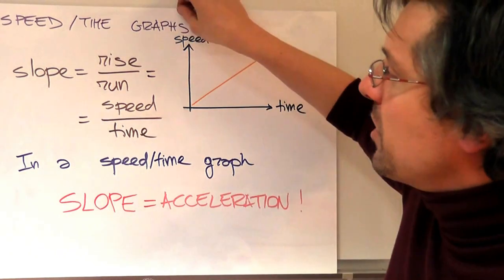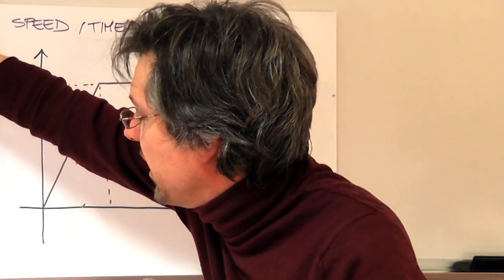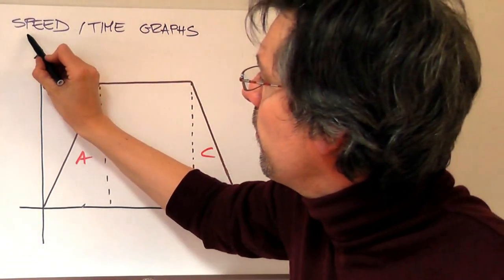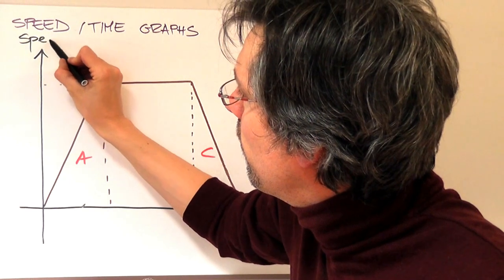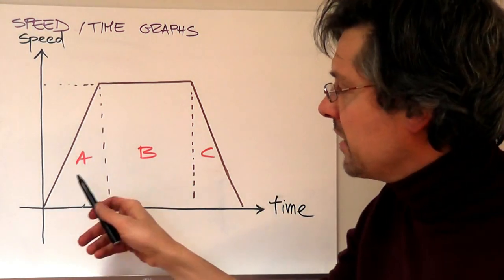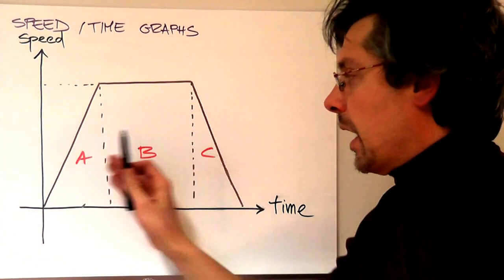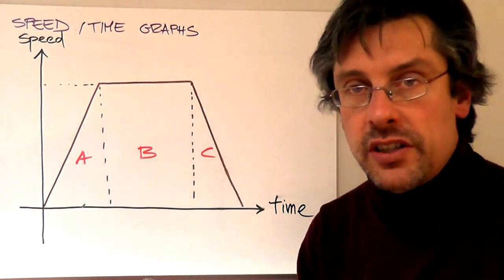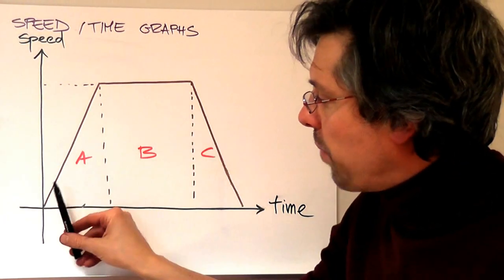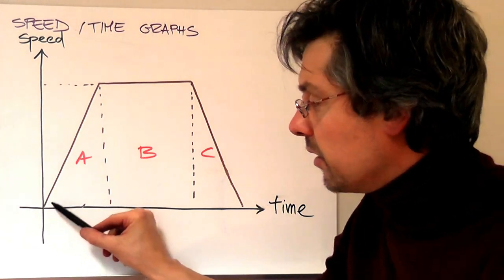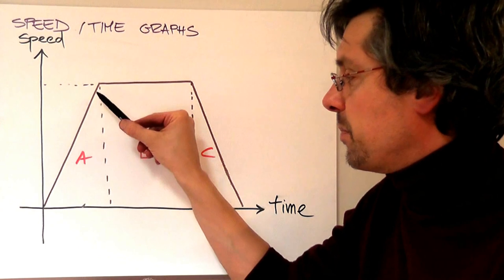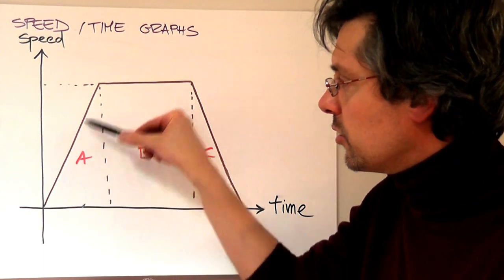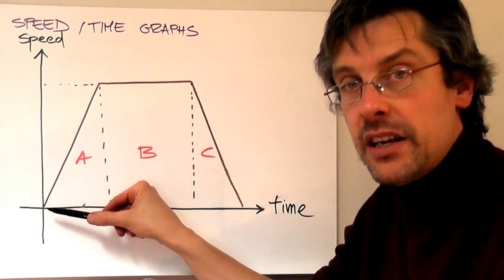Let's put all this information together and investigate a complex motion. This is a speed-time graph, and I have broken up this motion into three parts: parts a, b, and c. In part a, the object started from zero speed and increased its speed over this amount of time to reach a maximum speed. So in part a, the object is accelerating.